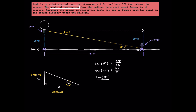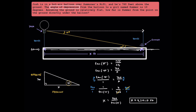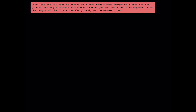Substituting in some values here, we can say tangent of 10 degrees is going to be equal to 760 over x. Since we have a fraction on the right side, we can rewrite the left side as a fraction over 1. Whenever x is in the denominator, we can flip the numerator and denominator on both sides of the equation. Once x is in the numerator, we can multiply both sides by 760 to solve for x. These 760s are going to cross-cancel, and we can say that x is going to be equal to 760 over tangent of 10 degrees. Plugging this into a calculator, we get that x is approximately 4,310.17 feet. That represents this horizontal distance here.